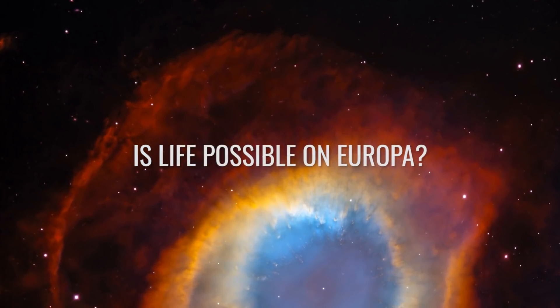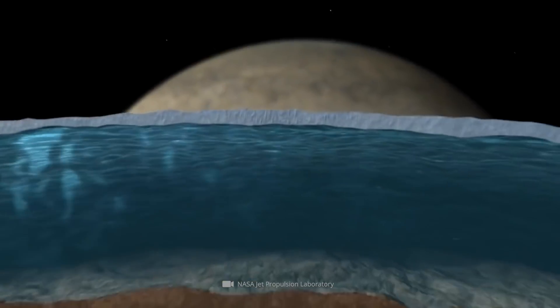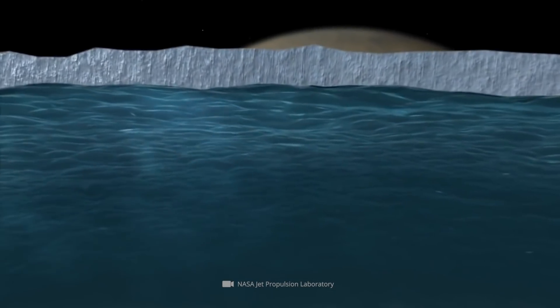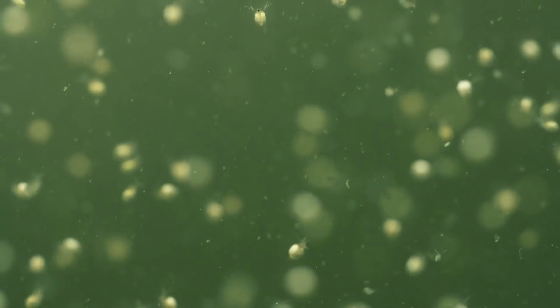Since the icy moon, according to our knowledge, is home to a gigantic ocean, a central question arises: Is it possible that the satellite is also home to living beings?